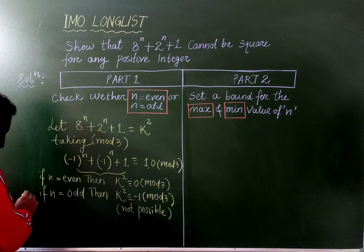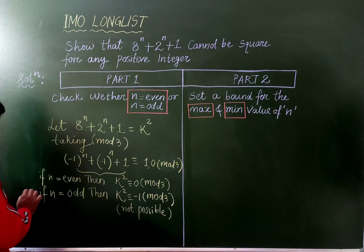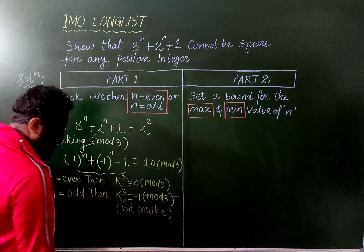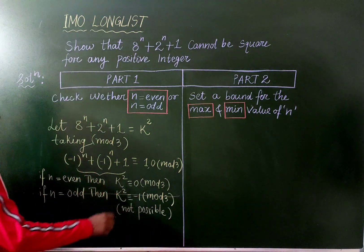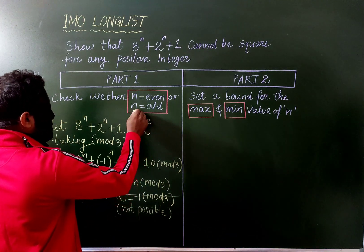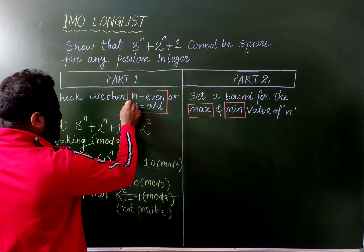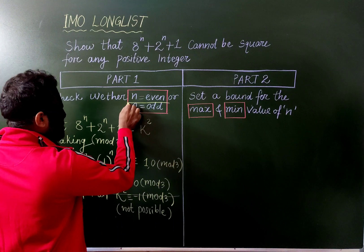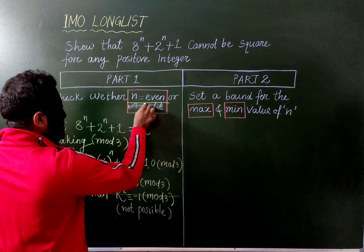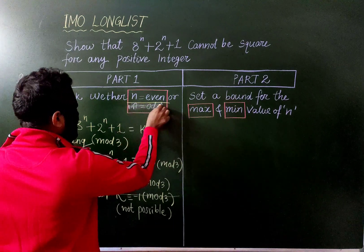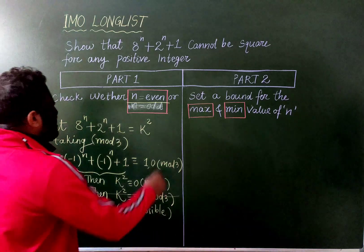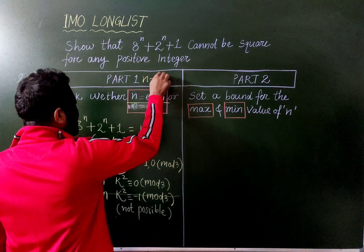So the condition that n is odd is discarded. We have established that n must be even only. Part 1 complete: n is even.